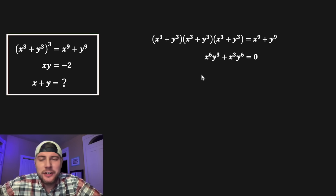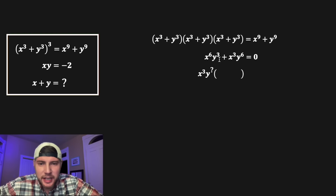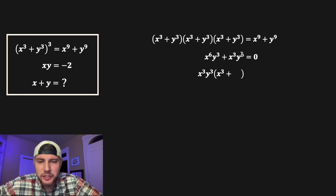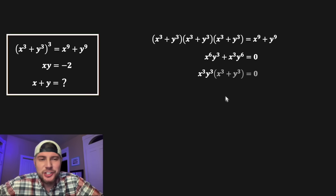From here we can pull out a GCF. Each of these terms contains an x³ and a y³ that can be pulled out. After pulling out x³y³, the first term leaves x³ and the second term leaves y³, so we have x³y³(x³ + y³) = 0.